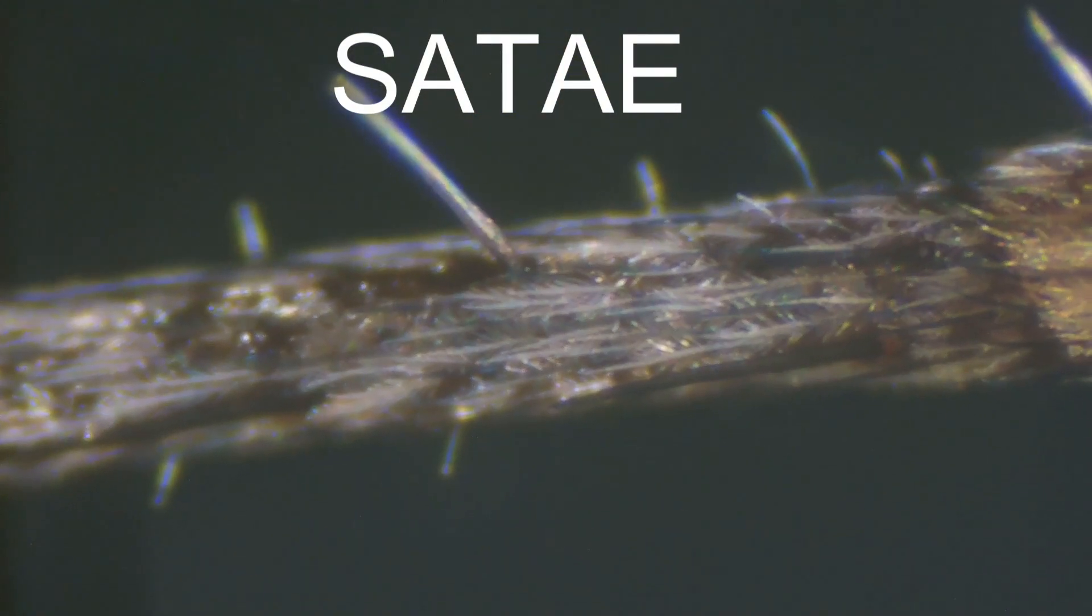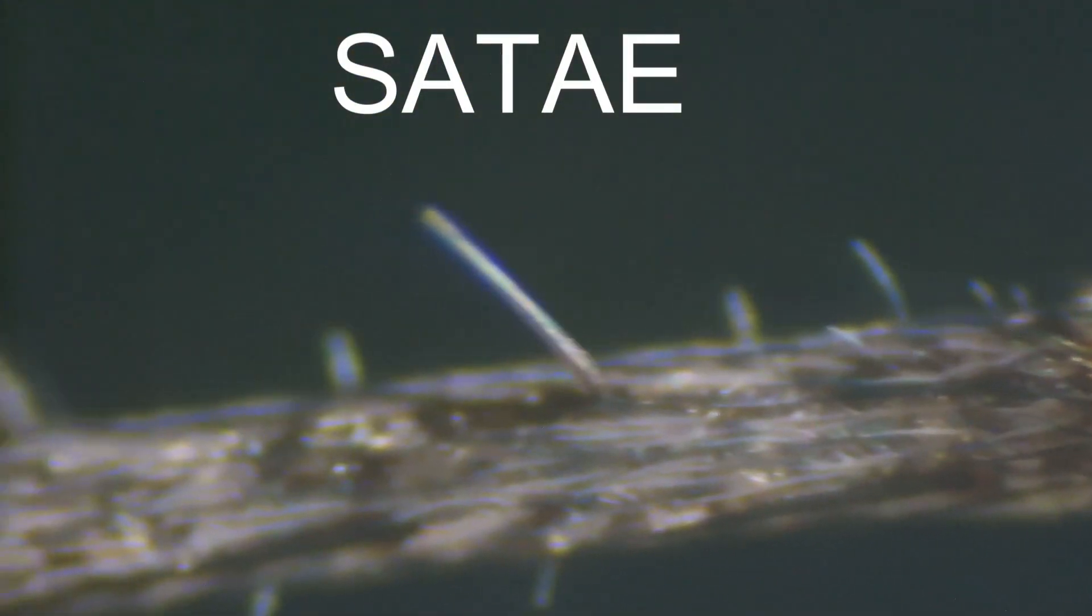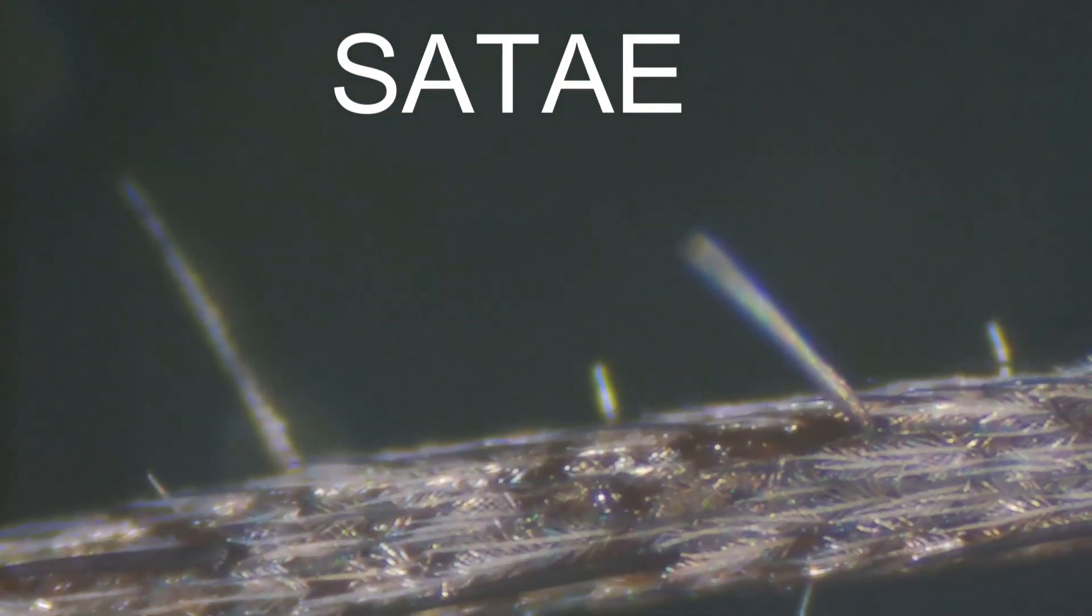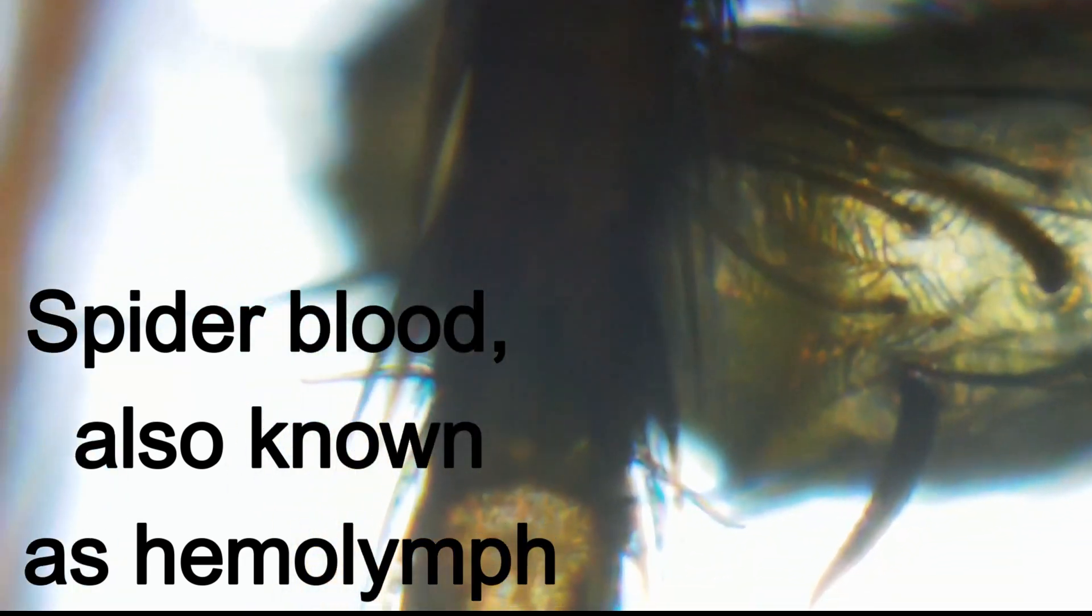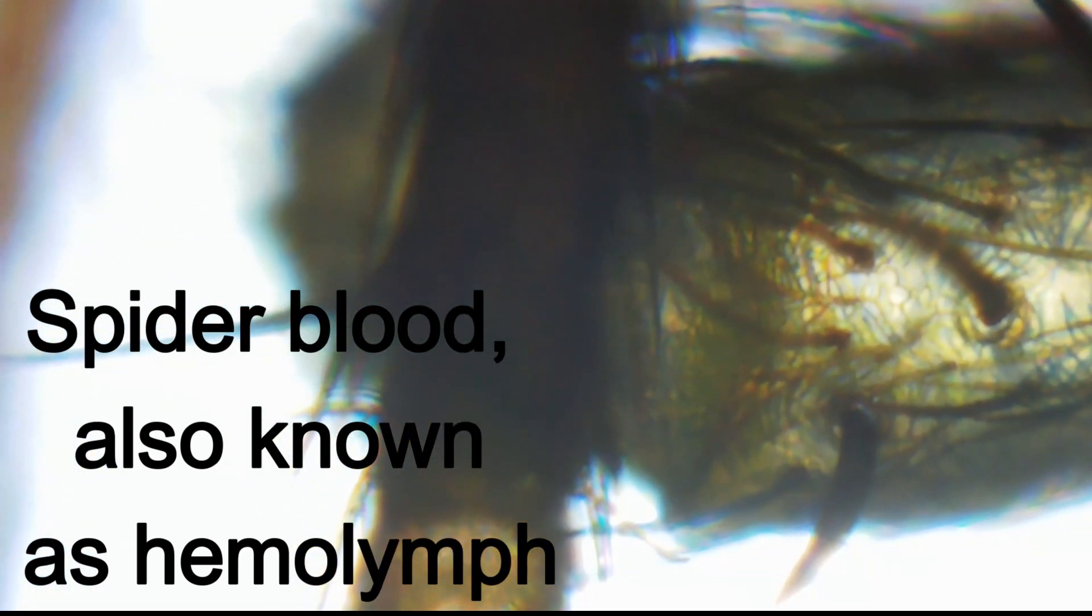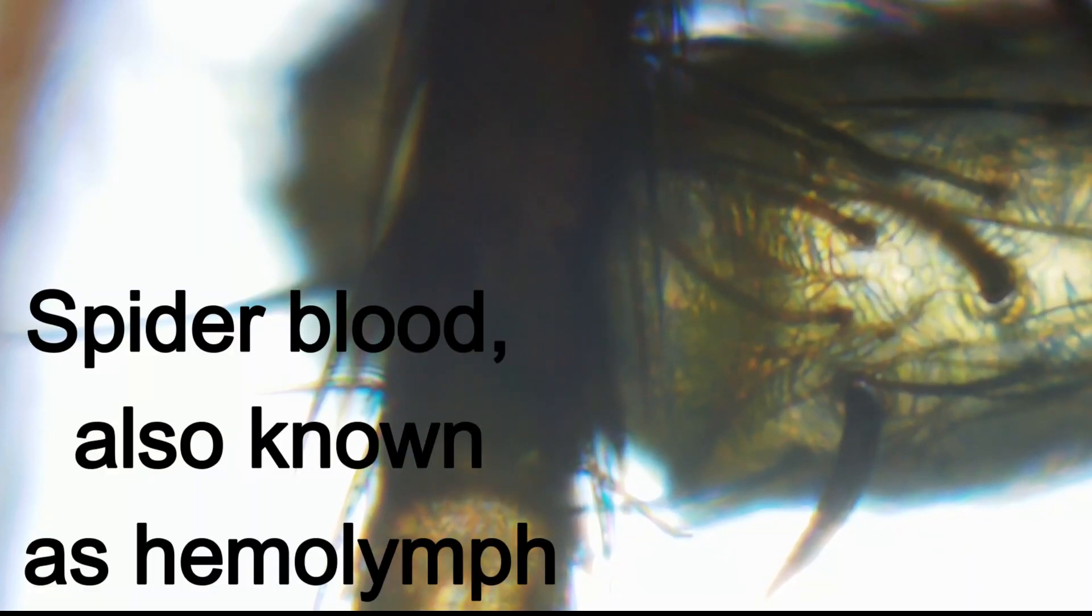Its eyes, eight of them neatly arranged, seem like tiny black beads on its head. Yet, despite having so many eyes, the American house spider has poor vision. It doesn't need to see you well because it lives by touch and vibration.